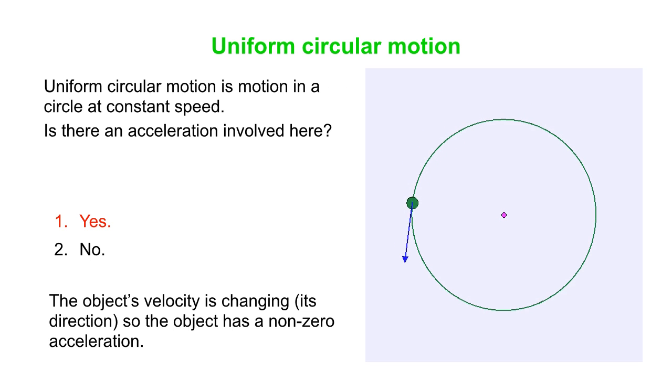So now we've labeled it with the velocity vector, and you can see that the velocity vector is steadily changing, not its magnitude, but its direction. Because the velocity changes, the object has a non-zero acceleration. So yes, there's an acceleration.